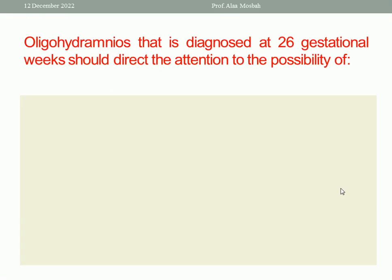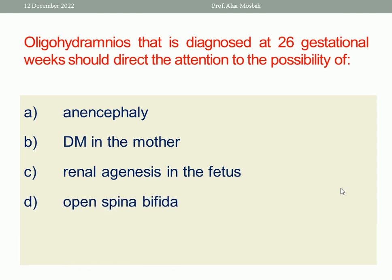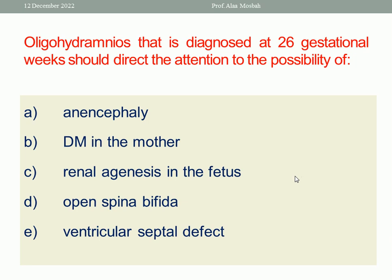Let us go to the next question. Oligohydramnios diagnosed at 26 gestational weeks should direct attention to the possibility of — A: anencephaly. B: diabetes mellitus in the mother. C: renal agenesis in the fetus. D: open spina bifida. E: ventricular septal defect. The one best response is renal agenesis in the fetus.